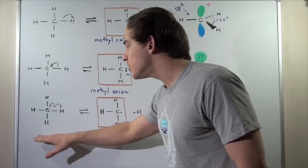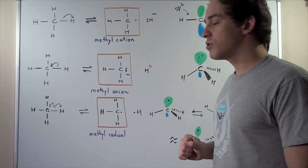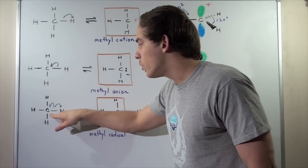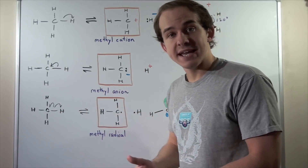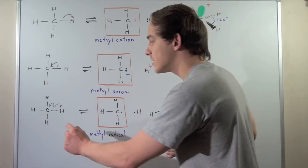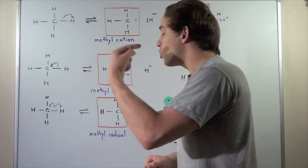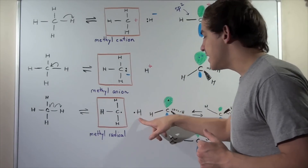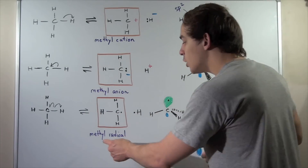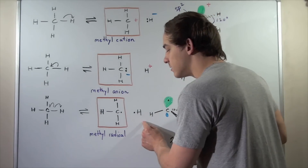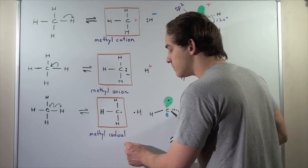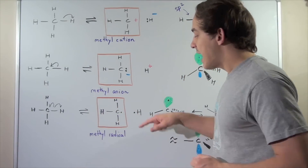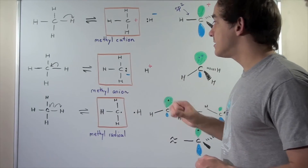Now let's look at the third type of reaction with the methane molecule. In this reaction, the CH bond dissociates in a way such that one electron goes onto the carbon and one electron goes onto the H atom. So we get two radicals: the methyl radical and the H radical. Each molecule has one electron in its orbital.